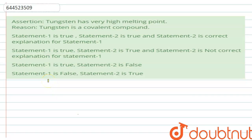Hello students. First, let's look at the question here. The question is of assertion and reasoning. The assertion says that tungsten has a very high melting point, and the reason given is that tungsten is a covalent compound. We need to check whether these statements are correct, and then verify whether the reason is the correct explanation for the assertion.